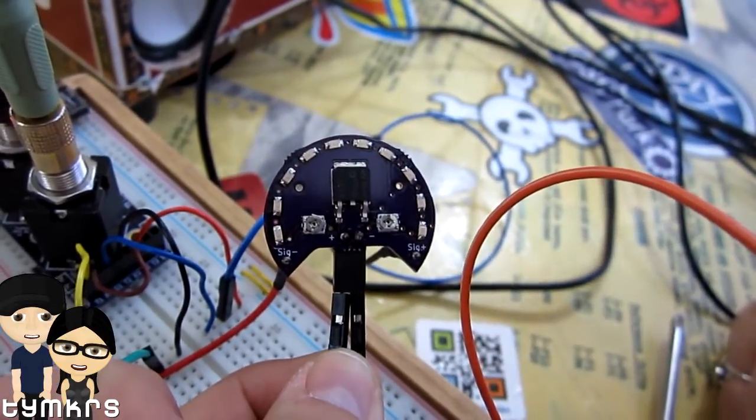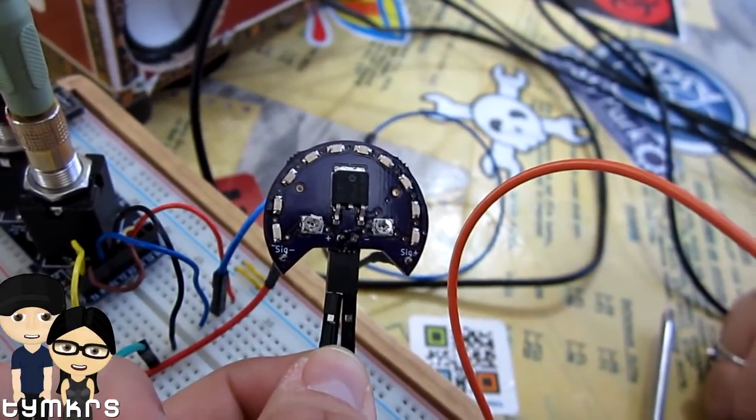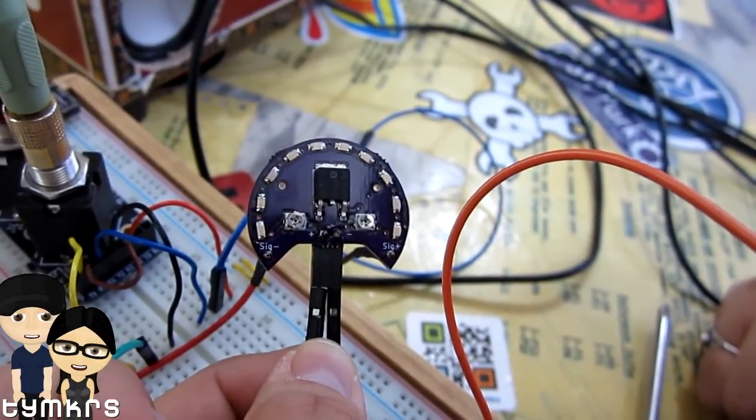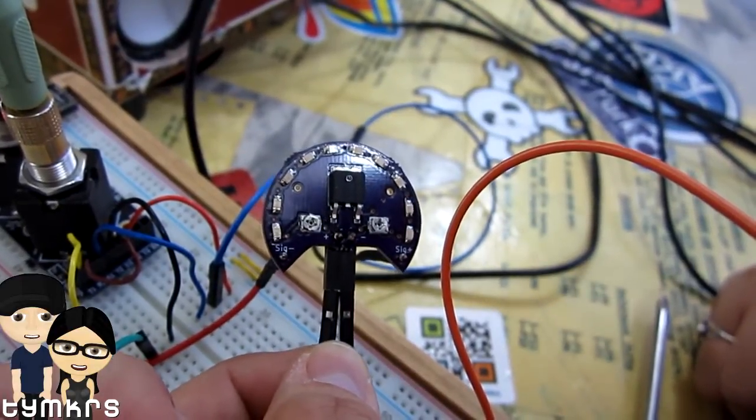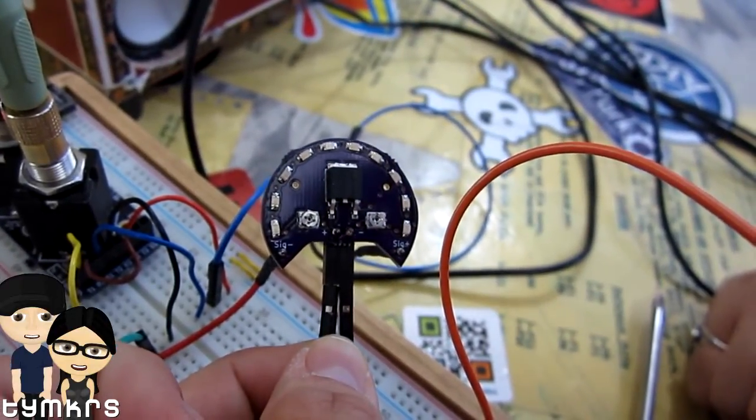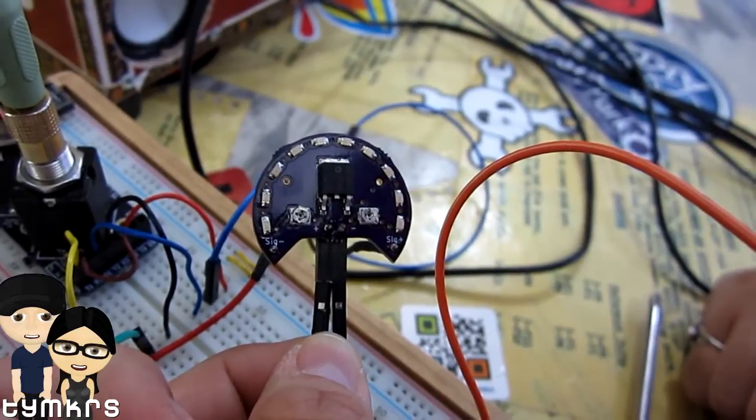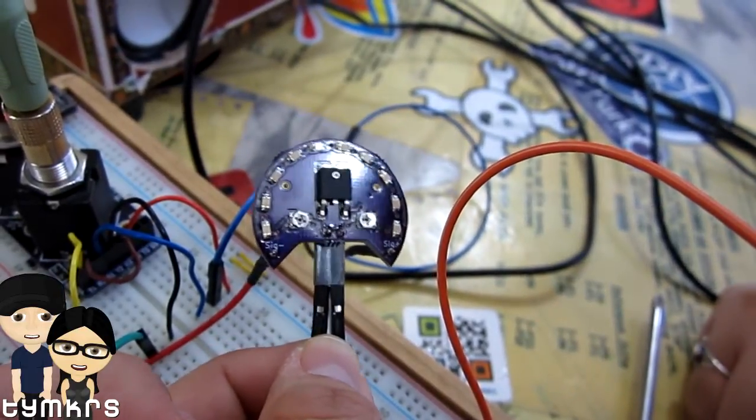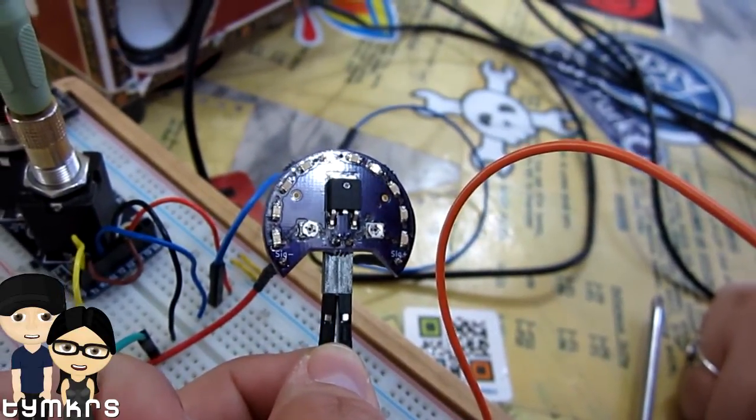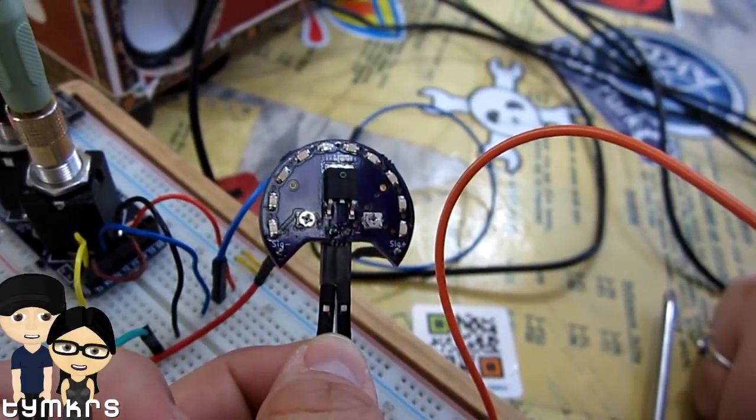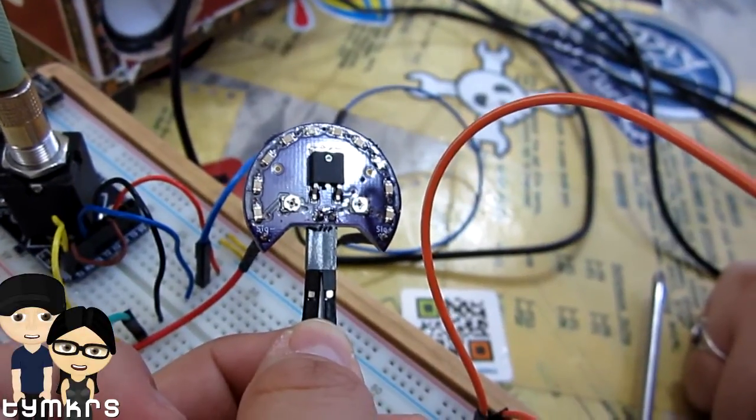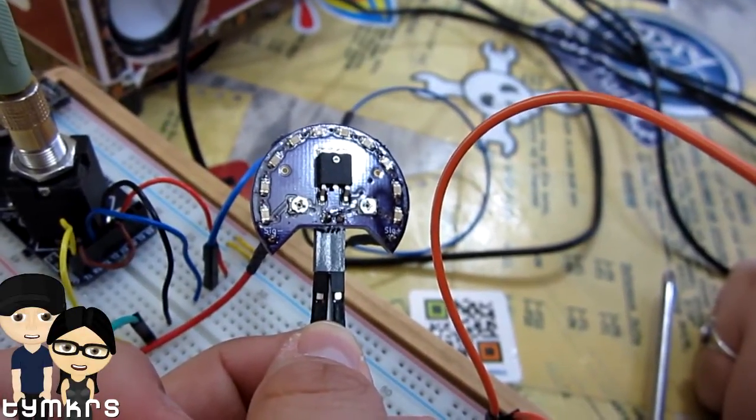So how do they get them? So these you can find on our store at tindie.com slash stores slash T-Y-M-K-R-S. And they should be available today. And we will have more coming in the mail. So if it's out of stock, just pre-order and you'll get it. And I will take care of it for you. Yep. All right, guys. Thanks for watching. I'll see you guys next time. Bye.